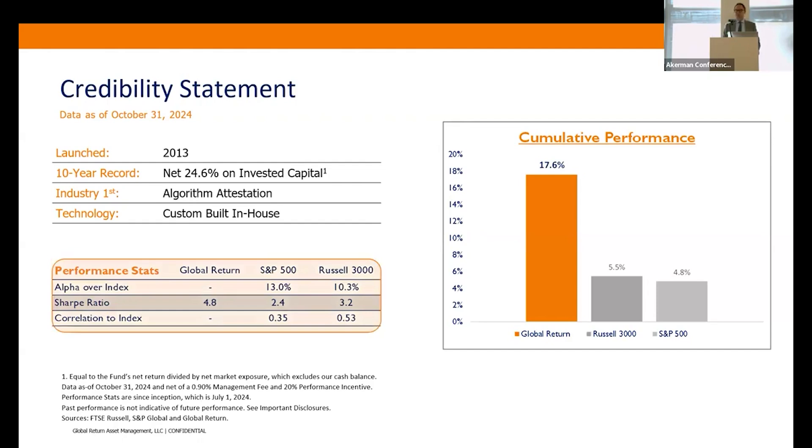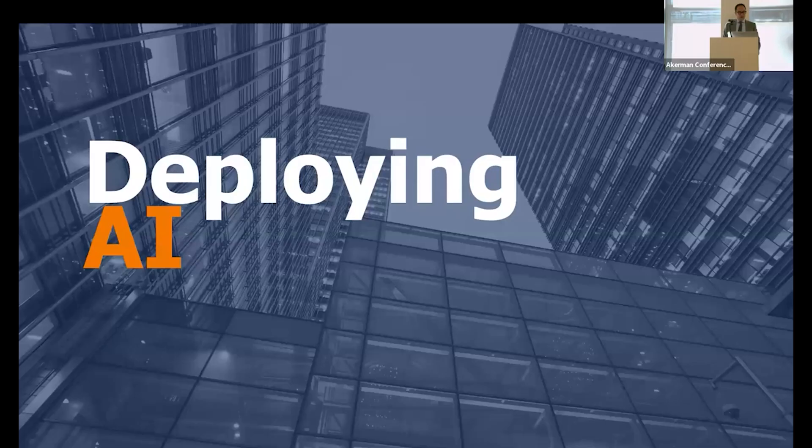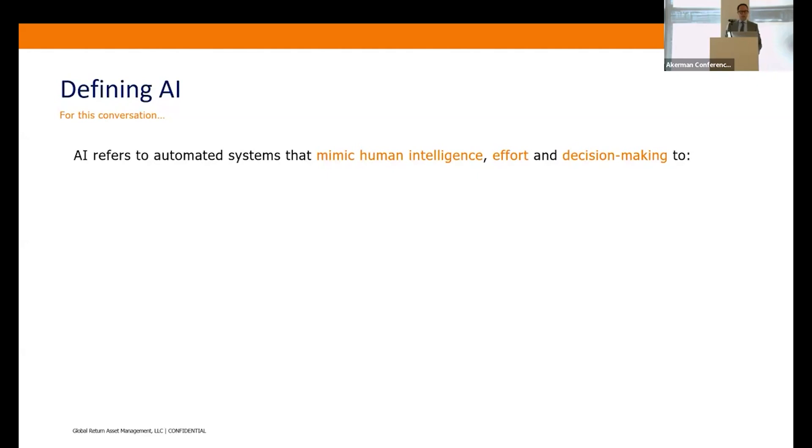Let's define AI. AI refers to automated systems that mimic human intelligence, effort, and decision-making. There are two ways we're using AI in our operations: one is to automate tasks, and examples of that would be extract, transform, load, and analyze.